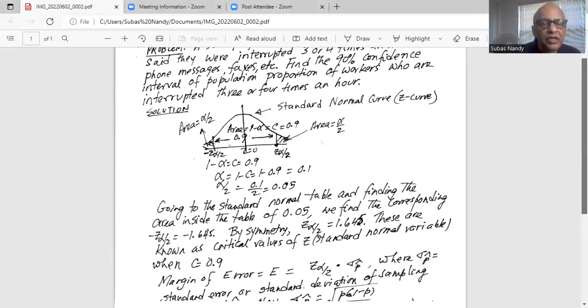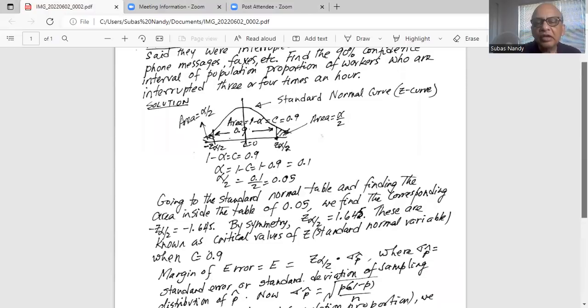How do I find the critical value? I go to the table, standard normal table, which you can find at the back of a statistics textbook or on the web.